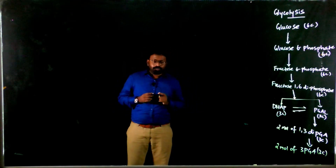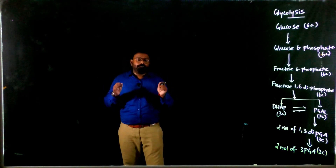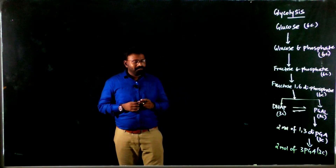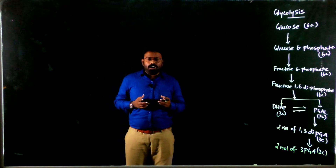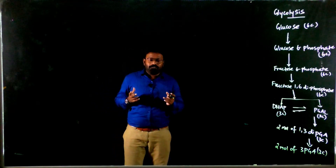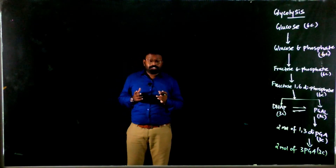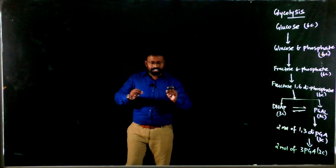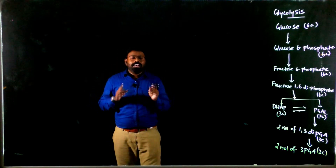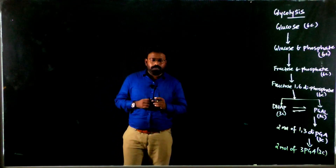Before getting into this topic, let's understand how this Calvin cycle plays a huge role in plant food production. In an ecosystem, the primary producers are plants. Plants need a sustaining molecule for their survival — that is glucose. So we need a glucose synthesis process inside the plant cells, and for that, Calvin cycle plays a huge role. This topic will make a good impact on MCQ credibility.